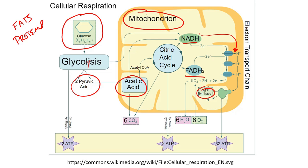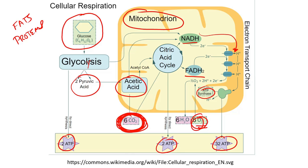Notice that we have oxygen going in — that's why we need to breathe. Oxygen is necessary for all this to happen. And carbon dioxide is a byproduct. So oxygen is going into the system, carbon dioxide is coming out, and that's why we breathe in oxygen and breathe out carbon dioxide. That's how we burn energy to get ATP — we burn fats, proteins, and sugars to get energy.